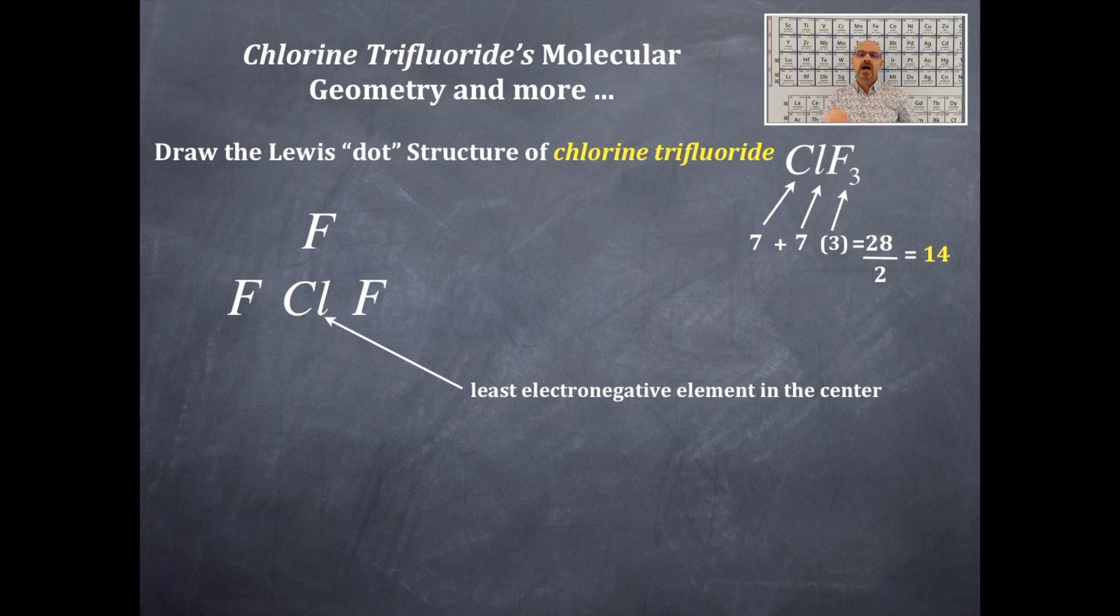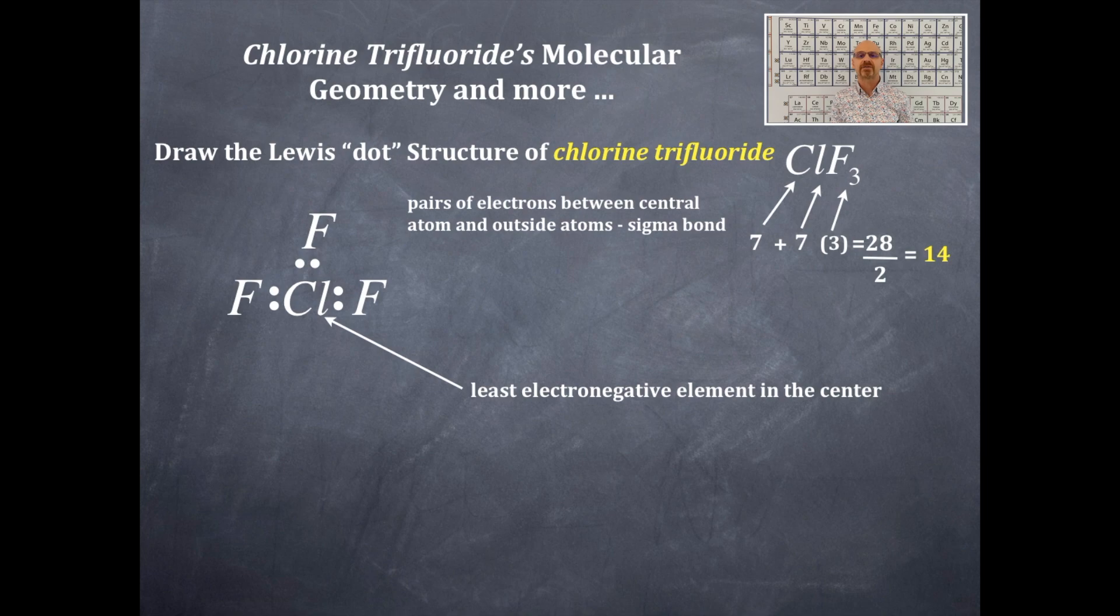Now I'm going to take 14 pairs of electrons. I'm going to take pairs of electrons and place them between the central element and the outside element as a single or a sigma bond. I still have some pairs of electrons left over, so now I'm going to place lone pairs of electrons around the outside elements.